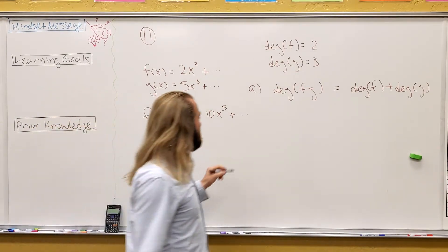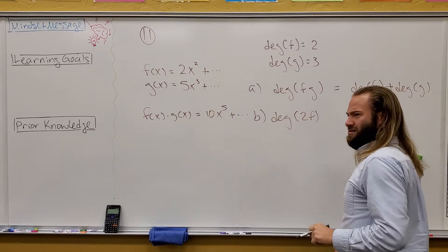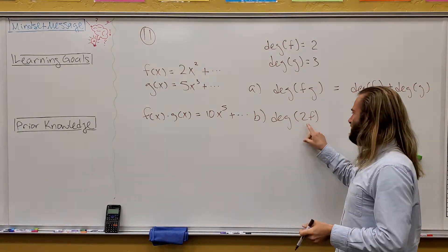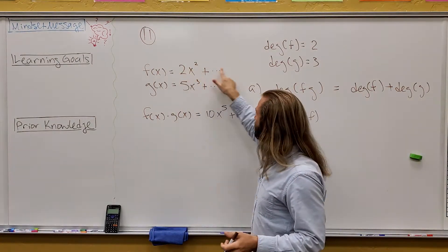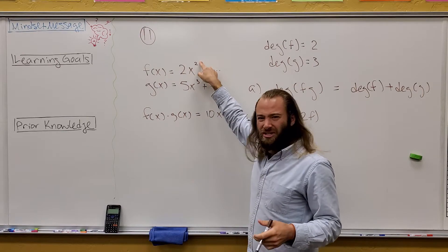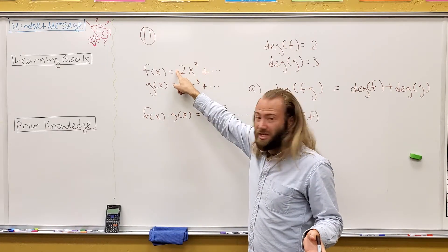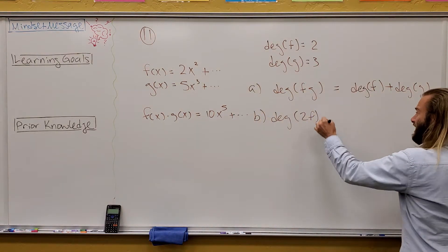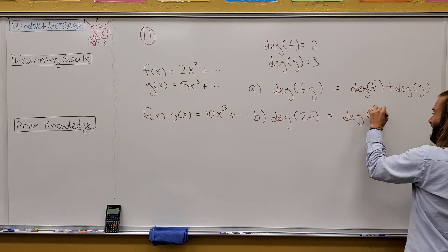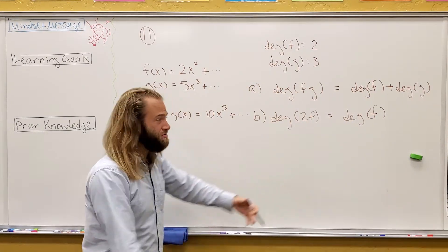Now, for Part B, it says, what's the Deg of 2F, I think? Or 2G, whatever. Basically, you're multiplying the whole function by 2. So if I multiply 2 into everything here, does that change the degree at all? Does that do anything to the exponents? It only changes the coefficients, right? So Deg 2F is the same as Deg F. They're just equal. You do not alter the degree by multiplying a 2 through there.